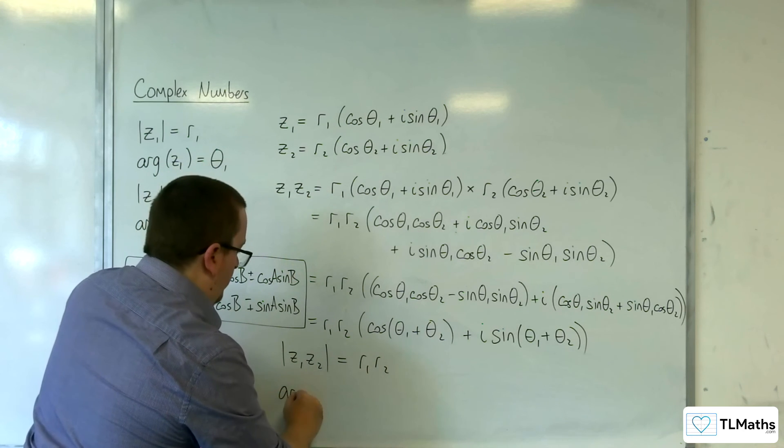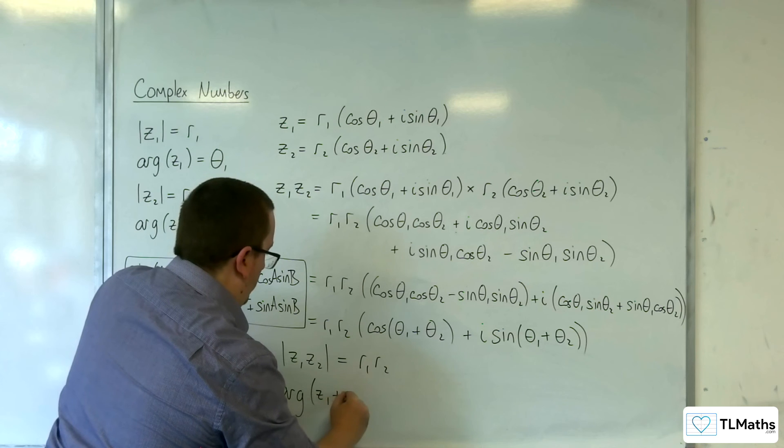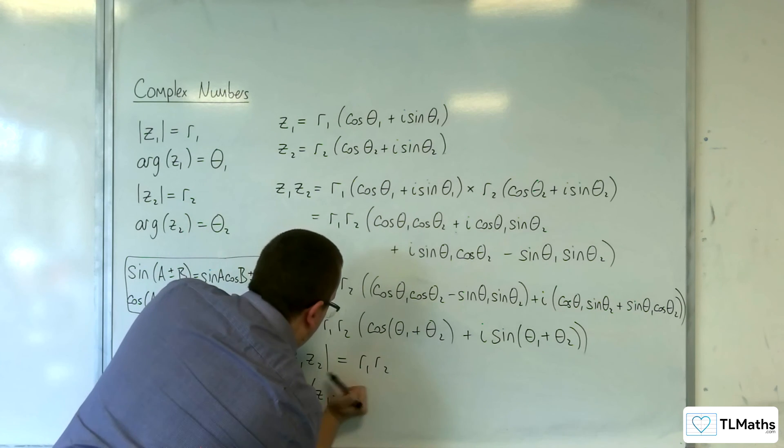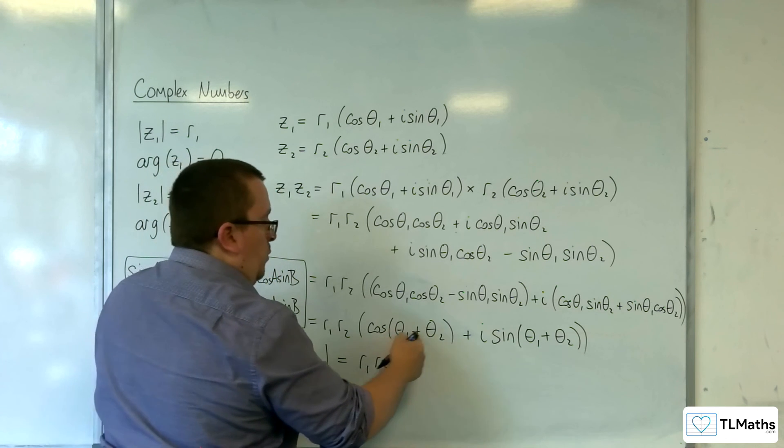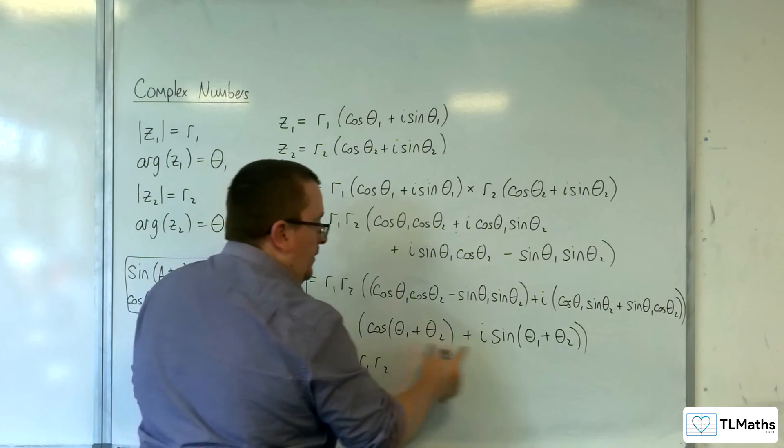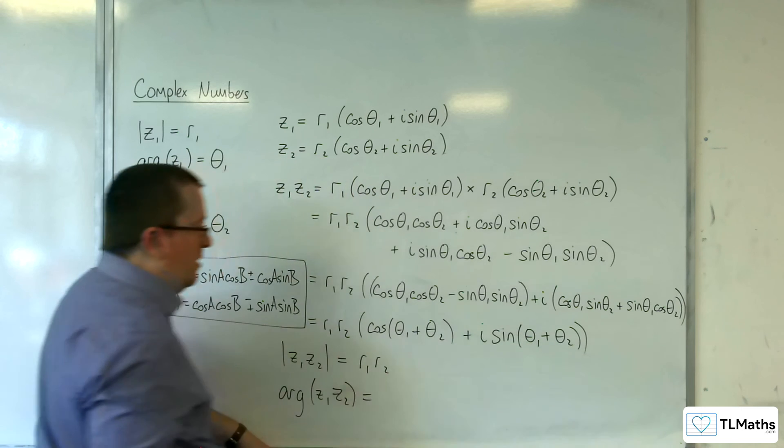And the argument of Z1 times Z2 is equal to theta1 plus theta2, the angle that is inside the trig bit.